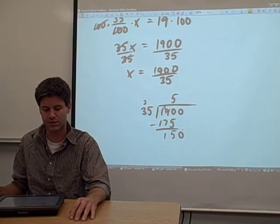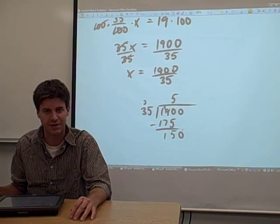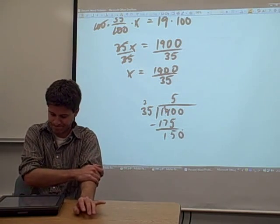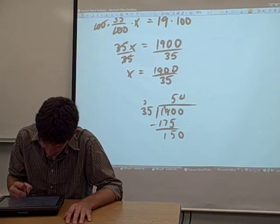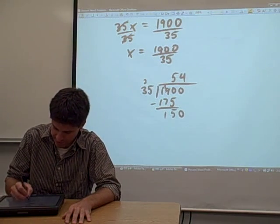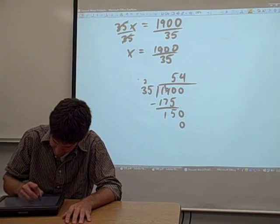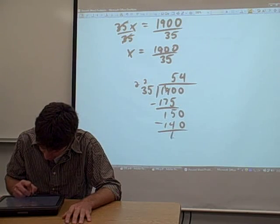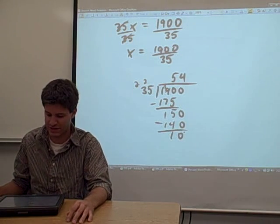We bring down the 0, and the question now is how many times does 35 go into 150? Now I'm going to guess 4 on this one. So we multiply the 4 times the 35, and if I'm multiplying right, we get a remainder of 10.